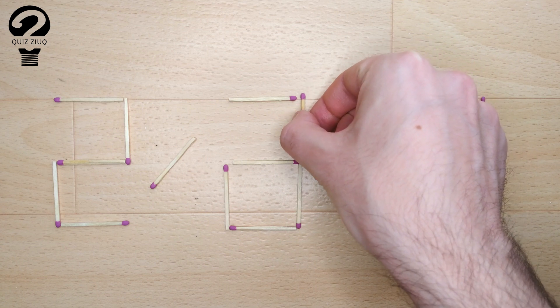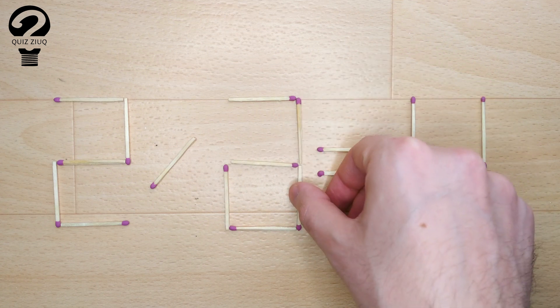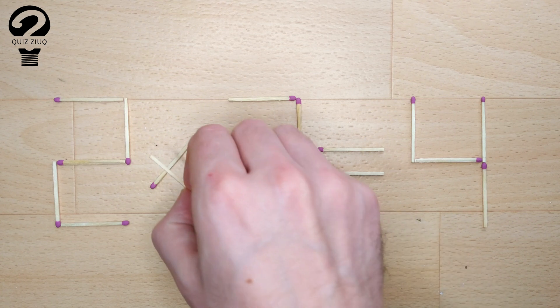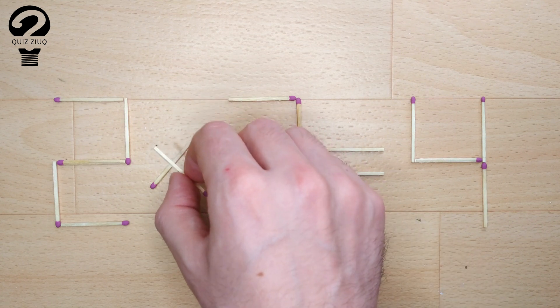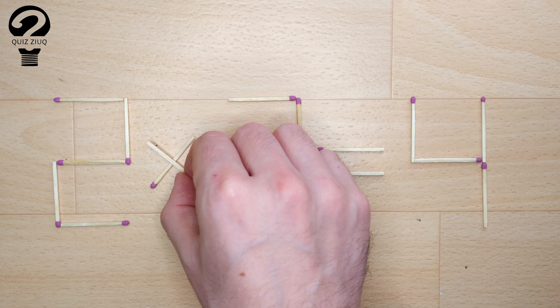And now, when we check the condition: 2 times 2 equals 4, 4 equals 4. Our equation is correct. The task is completed.